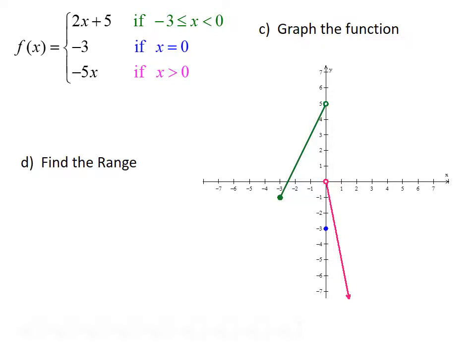Finally, we find the range of this function by looking at our graph. The purple line from negative 5x has an arrow indicating it continues downward, so our range goes from negative infinity. The highest y value occurs at y equals 5, but since we have an open circle there, 5 is not included. So our range is the interval from negative infinity to 5, with the endpoint not included.